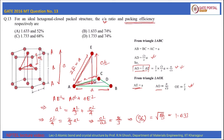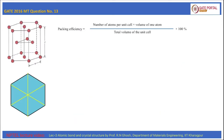Now let us calculate the packing efficiency. Packing efficiency is defined as the percentage of the unit cell which is occupied by atoms. So packing efficiency is basically the number of atoms per unit cell multiplied by the volume of one atom, divided by the total volume of the unit cell.